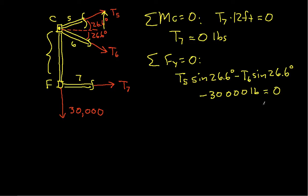Okay, we can't solve this directly yet for anything, so let's sum the forces in the X direction. And we have here that T5 cosine 26.6 degrees plus T6 cosine 26.6 degrees is equal to 0.